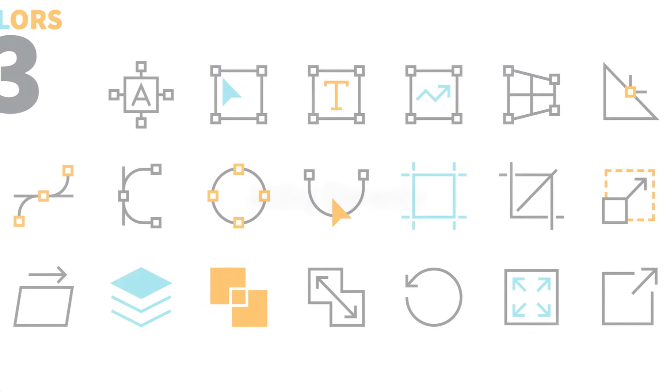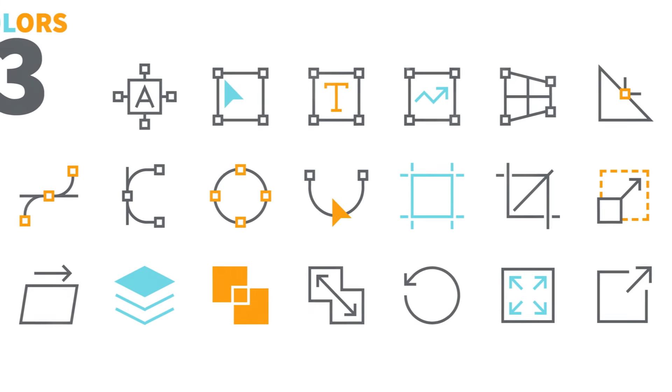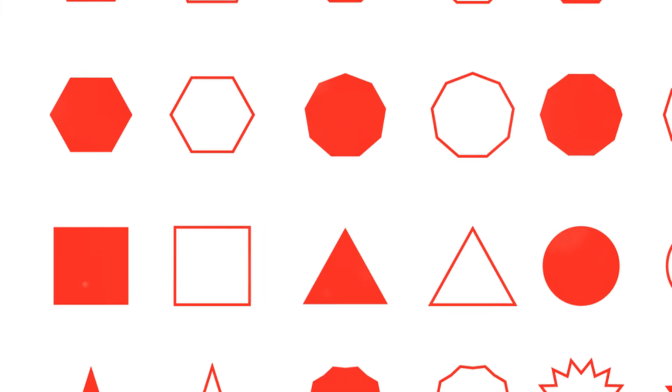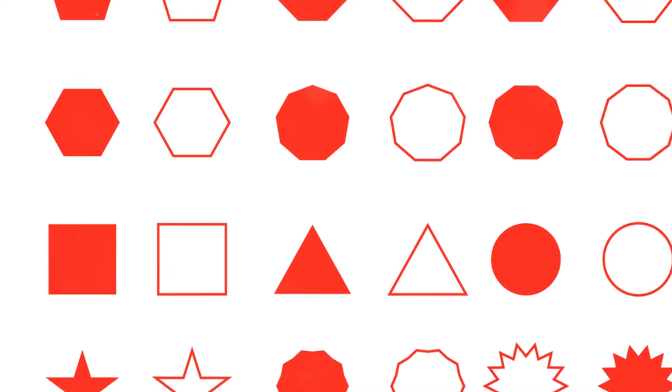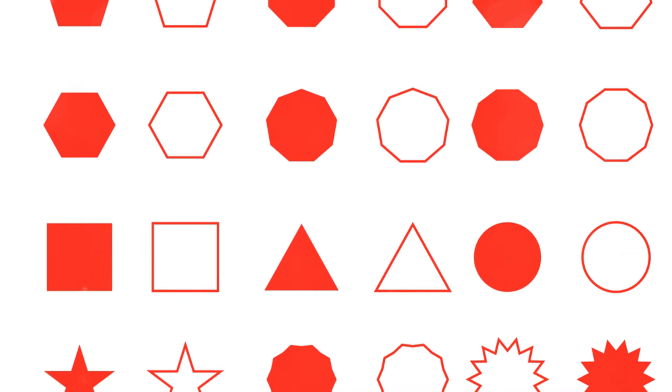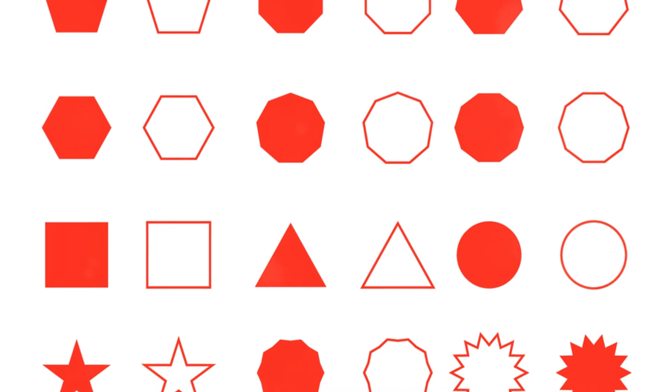Step 5: Adding elements. To add elements like shapes, icons, and images, go to the Elements tab on the left-hand side. Simply drag and drop elements onto your design — you can resize and reposition them as needed.